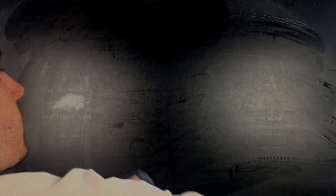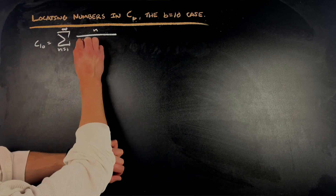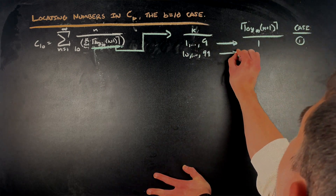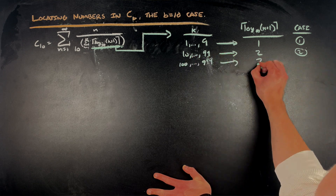Another thing that makes these numbers pretty accessible examples of disjunctive sequences is that you can actually use an algorithm to locate a particular number represented within the given base of the constant, and you can do it pretty efficiently. I'm going to present an example for the b equals 10 case. The first thing to look at is the formula for C10, particularly the log series term. In base 10, 1 through 9 all have log values between 0 and 1, so the ceiling evaluates to 1. Similarly, 10 through 99 evaluate to 2; 100 to 999 evaluate to 3, and so forth.